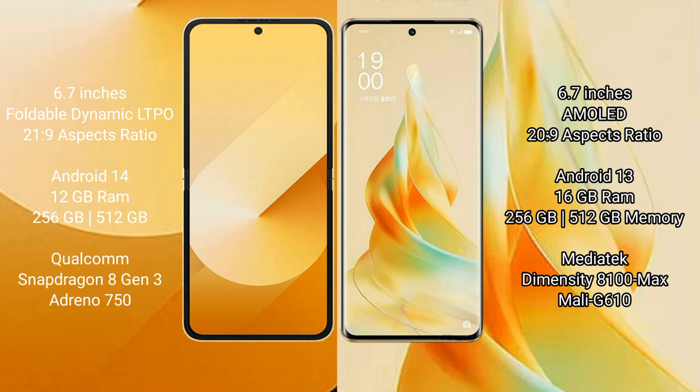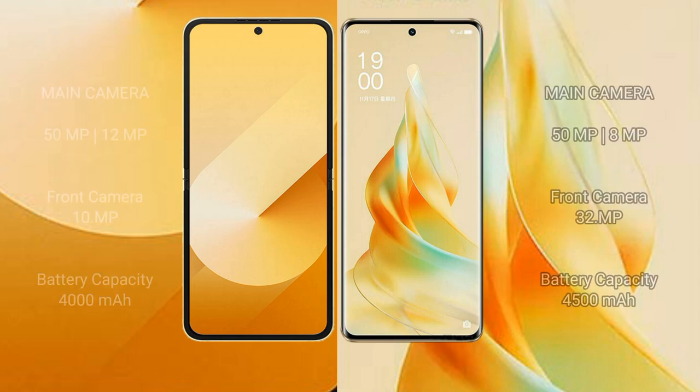Samsung Galaxy Z Flip 6 is powered by the Qualcomm Snapdragon 823 processor with Adreno 750 GPU. Oppo Reno 9 Pro uses the MediaTek Dimensity 8100 Max processor with Mali-G610 GPU. Samsung Galaxy Z Flip 6 has a rear dual-camera setup: 50MP plus 12MP, and a 10MP front camera. Oppo Reno 9 Pro has a rear dual-camera setup: 50MP plus 8MP, and a 32MP front camera.